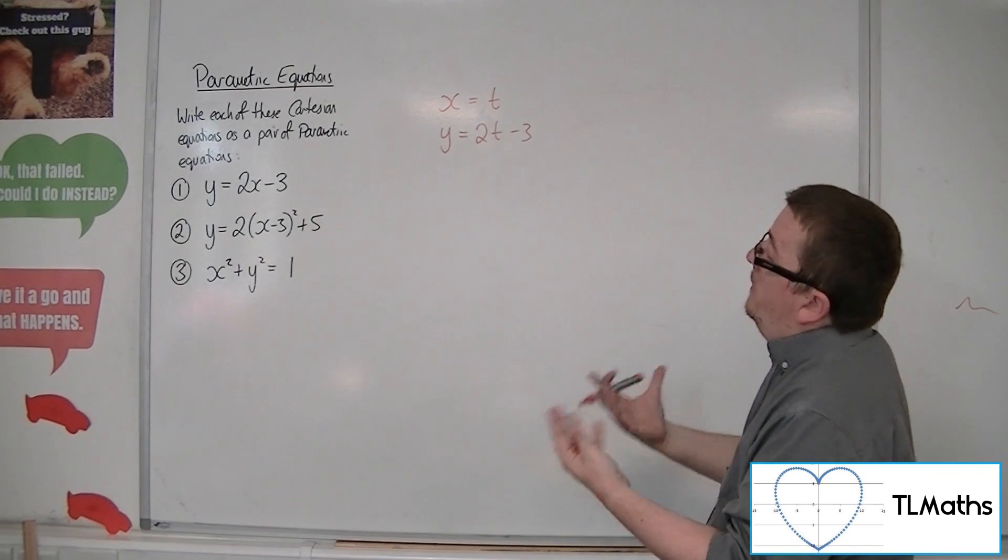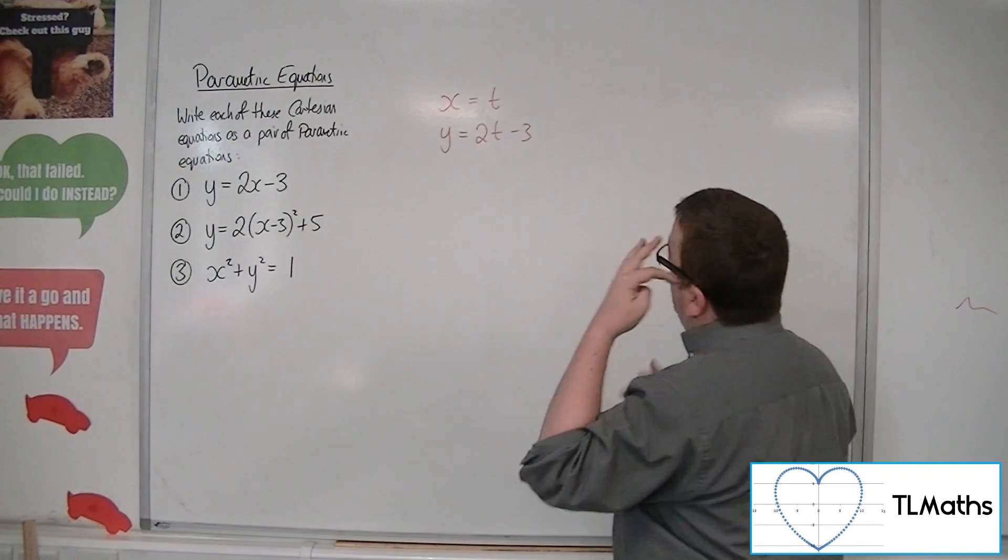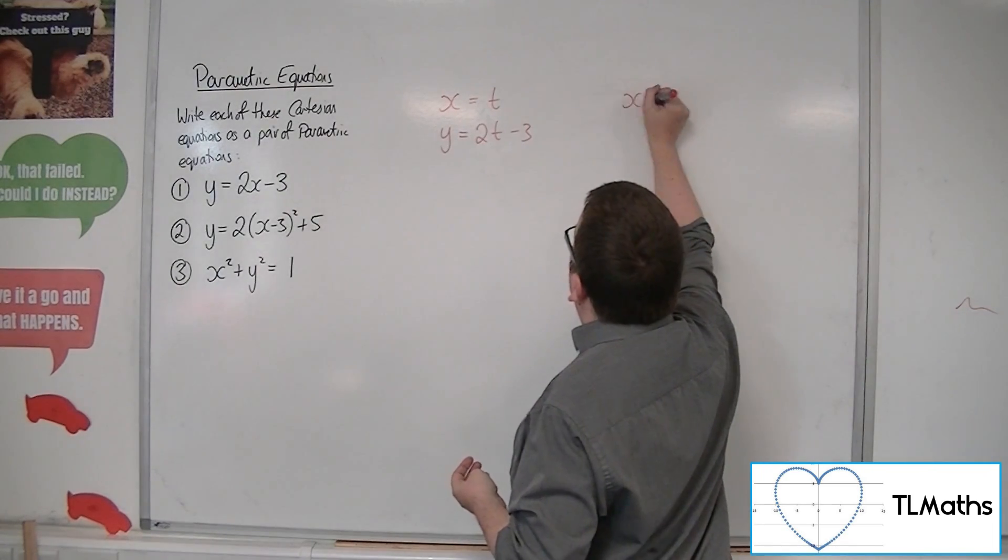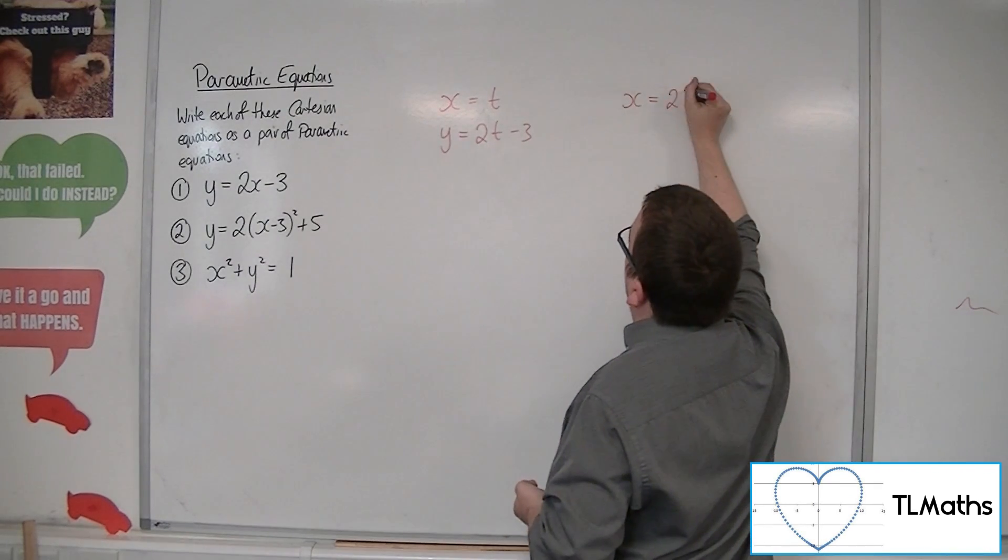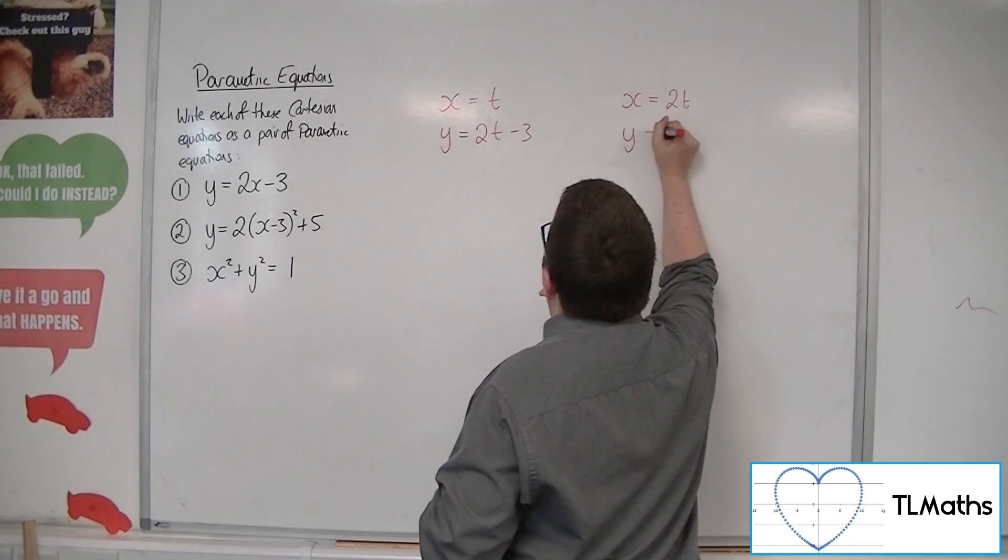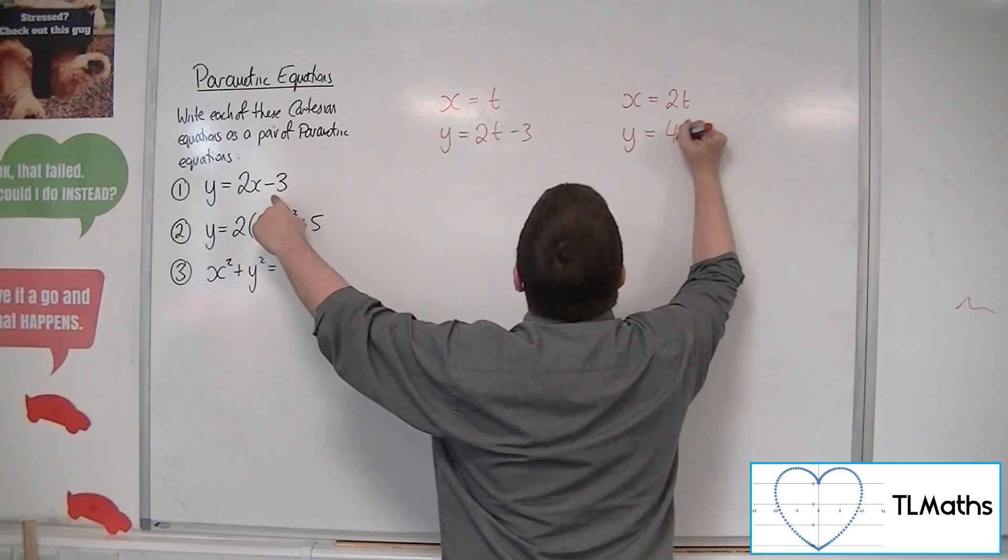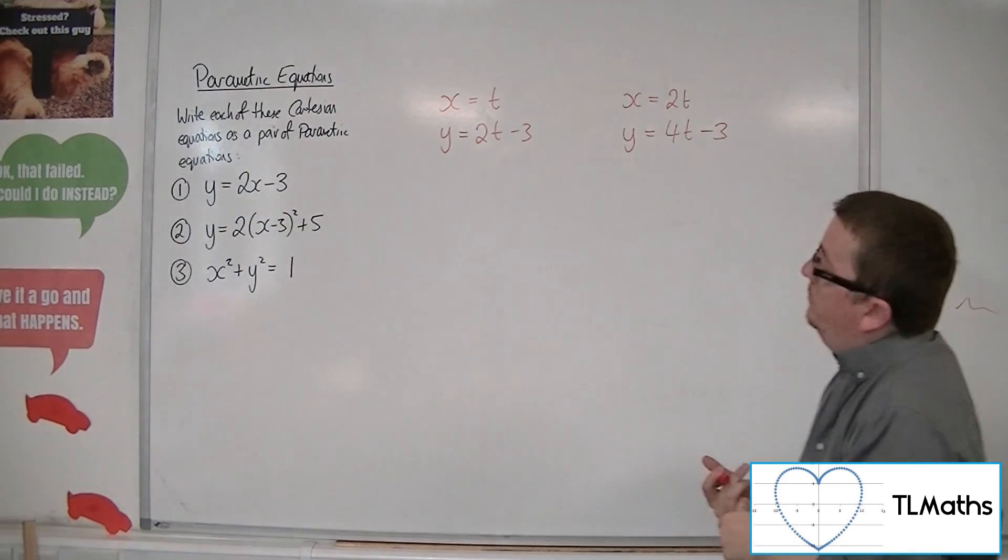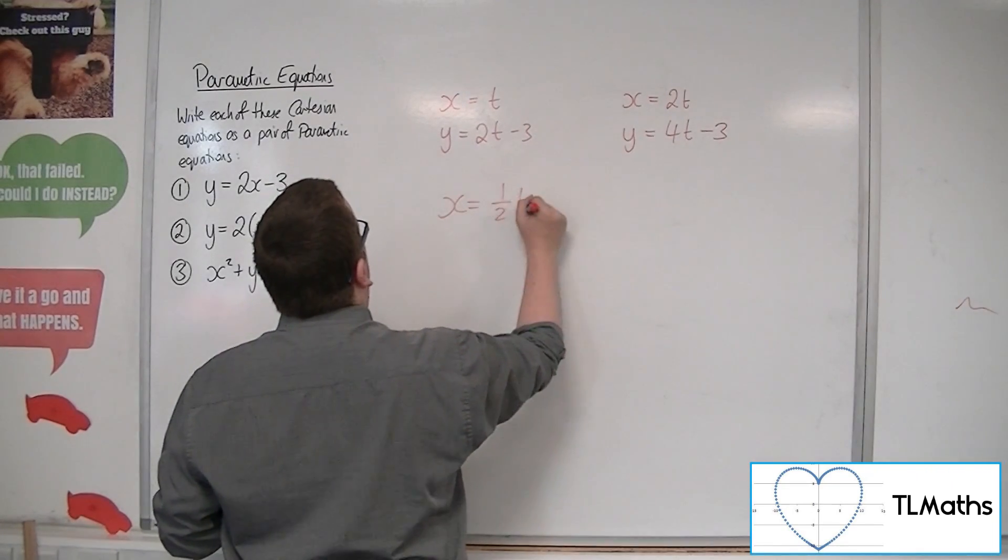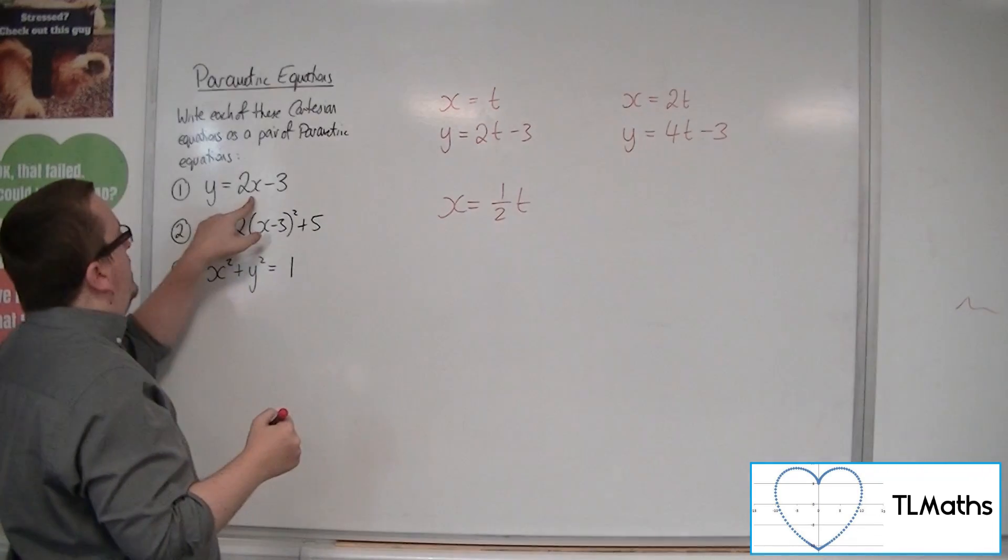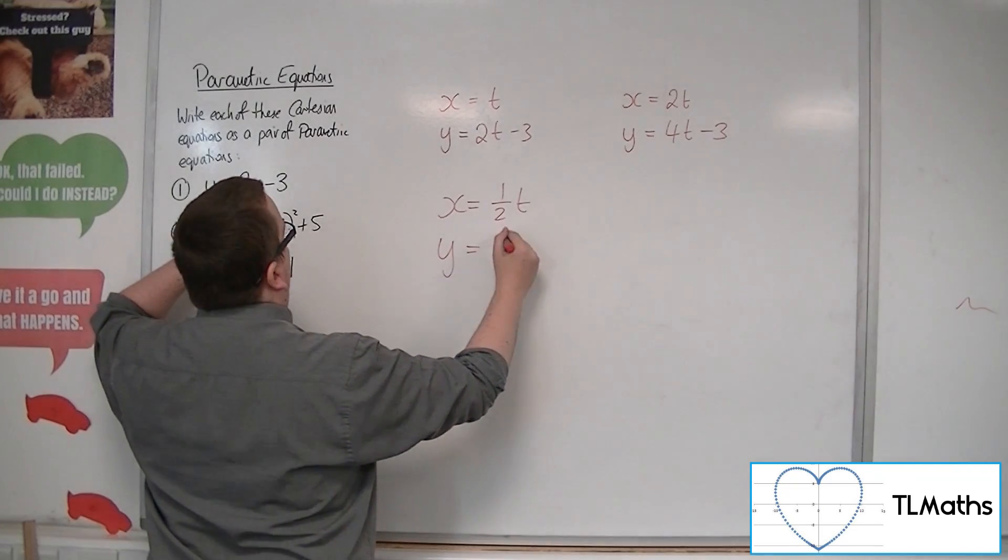Now, you could make it a little bit more interesting if you wanted to. You could say, well, if x is equal to, let's say 2t, then y would be 2 lots of 2t take away 3. So 4t minus 3. Or I could have said x is equal to a half t, in which case I'd get y is equal to 2 lots of a half t minus 3. So t minus 3.